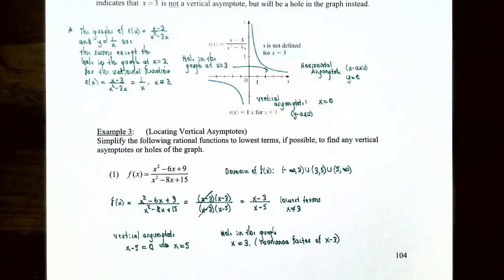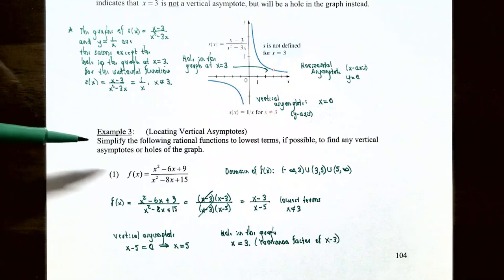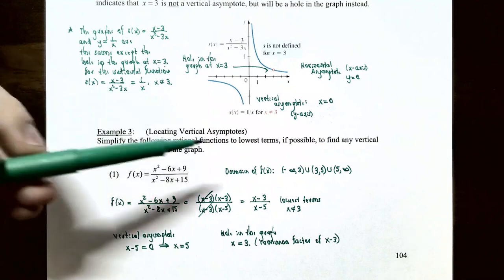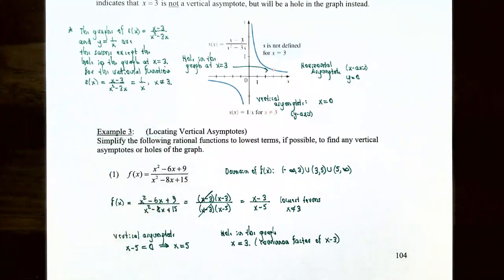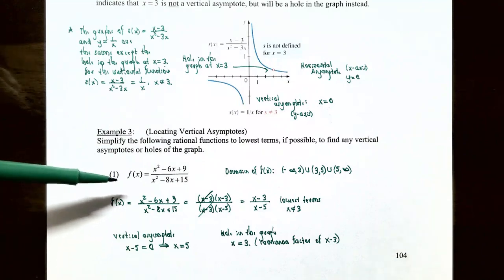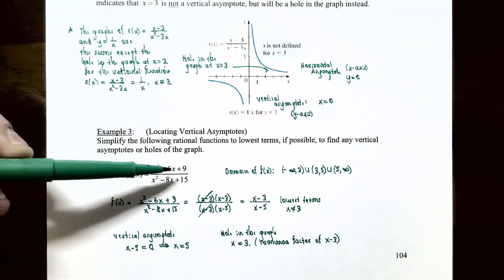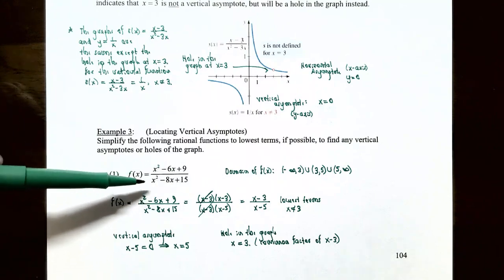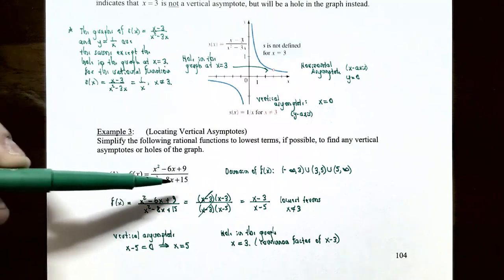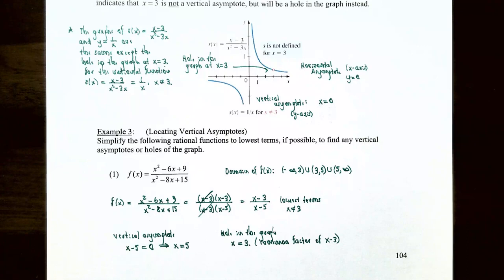In Example 3, we're going to locate vertical asymptotes. Simplify the following rational functions to their lowest terms, if possible, to find any vertical asymptotes or holes in the graph. Number one: f(x) equals x squared minus 6x plus 9 in the numerator and x squared minus 8x plus 15 in the denominator. Let's simplify by factoring both the numerator and denominator.